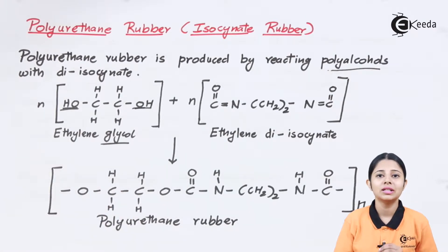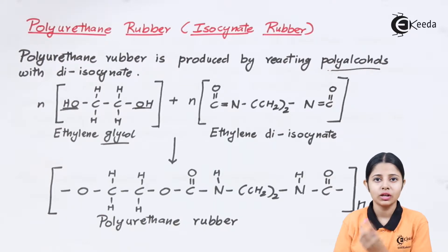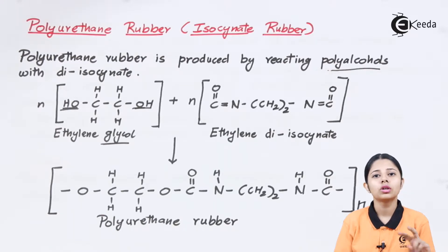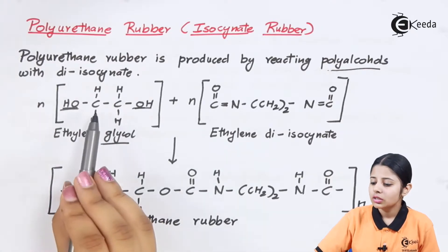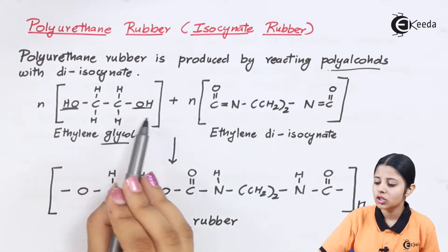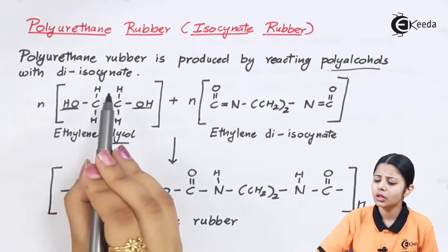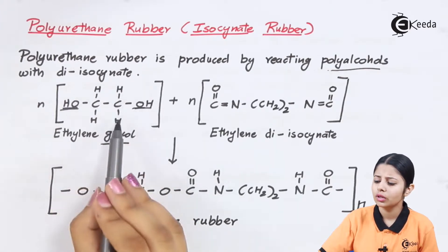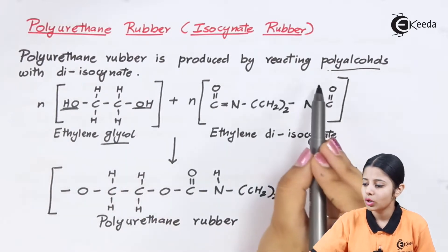This is ethylene glycol. Ethylene means ethane, which has two carbons. In ethylene glycol, on both carbons I have OH groups attached. So this is C with an OH group attached to it, and another C with an OH group attached to it. The remaining valencies are fulfilled by hydrogens. This is my polyalcohol.